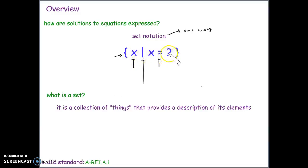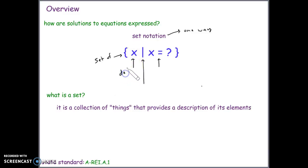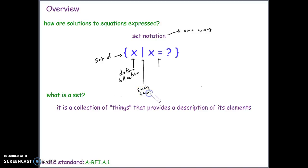The brackets represent the set of X, where X is the variable in the equation. The letter X defines the collection, the bar means 'such that,' and the stuff to the right of the bar represents the rules or conditions of the set.